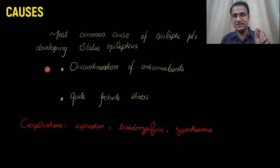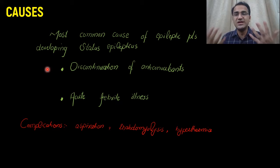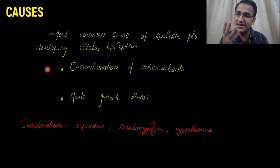Complications of status epilepticus include aspiration, since the patient is having abnormal muscular contractions and abnormal reflexes, predisposing them to aspiration. Increased muscle contraction can also result in rhabdomyolysis, causing elevated CPK levels, hyperthermia, and damage to the body due to hyperthermia.